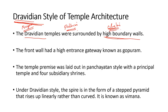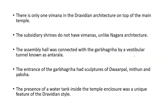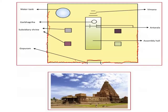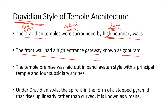Apart from the boundary wall, the front wall has a high entrance gate called Gopuram. This big gateway is the entrance to the temple, situated in front of the temple shrine. This gateway is called Gopuram. In Nagara style of architecture Gopuram was absent, but in Dravidian style of architecture there is a presence of Gopuram or high entrance gateway.